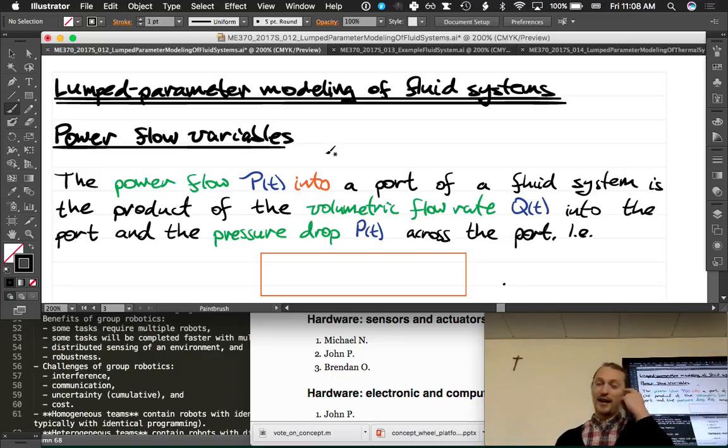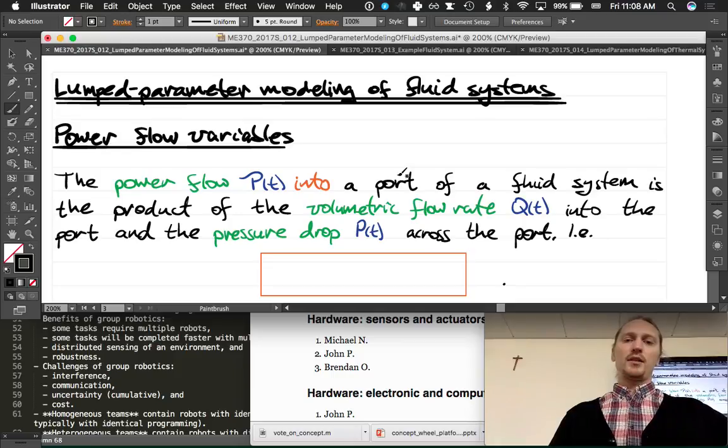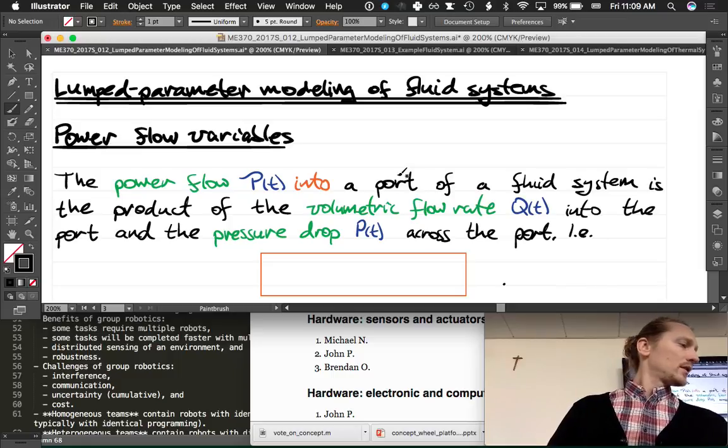Oftentimes, mechanical engineers really like to think of electronics as being like a fluid. So it's natural to us. Let's start off with the power flow variables of a fluid system. The power flow, P, into a port of a fluid system is the product of its two power flow variables.